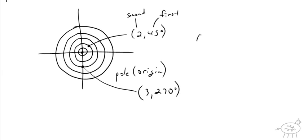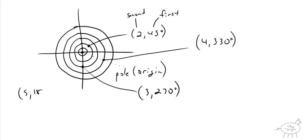How about 4 comma 330 degrees? You go 330 degrees — it's almost 360 — and go out 4. That's 4 comma 330. And if I said 5 comma 180 degrees, that means 180 degrees is to the left, so it's 1, 2, 3, 4, 5 — and that's that point right there.